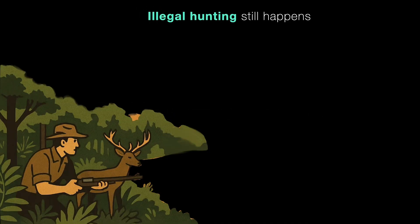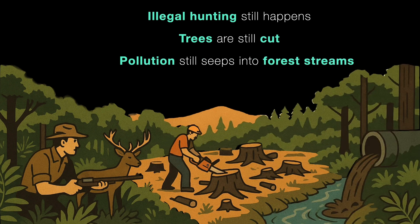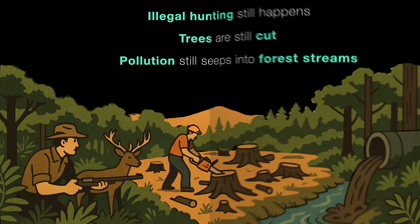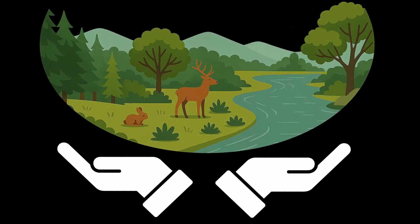But protected areas alone aren't enough. Illegal hunting still happens, trees are still cut, and pollution still seeps into forest streams. So conservation needs more than science and fences — it needs awareness, education, and action from all of us. The good news: when forests are protected, species come back; when rivers are cleaned, fish return; when people care, nature recovers faster than we think. Even one tree planted, one animal protected, one plastic bag avoided adds up to something massive.